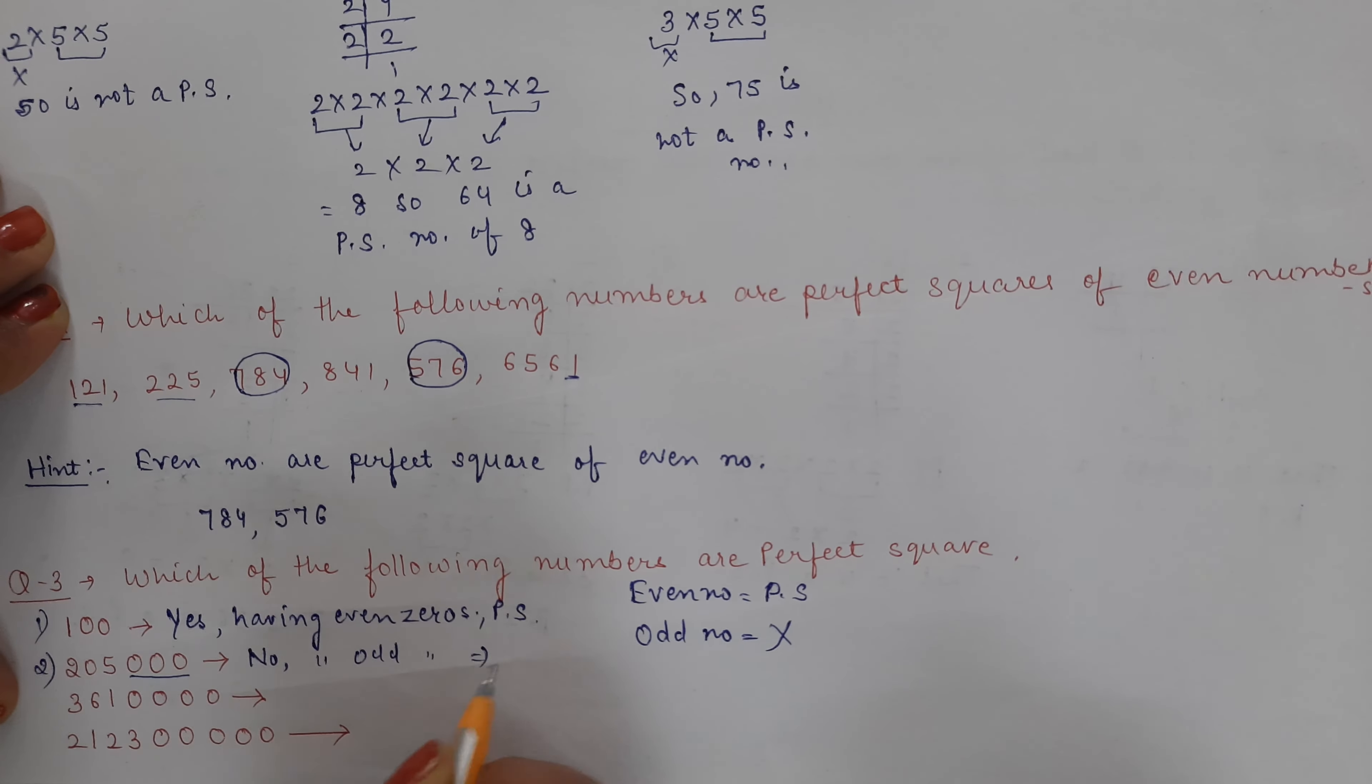Okay, the third number is 6310000. How many zeros? One, two, three, four. So again, yes, it is a perfect square number.